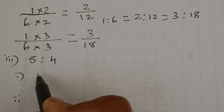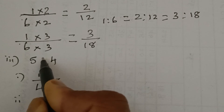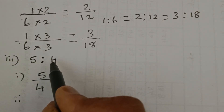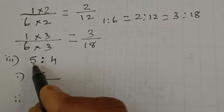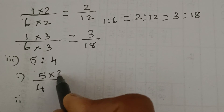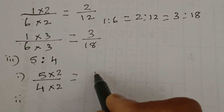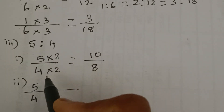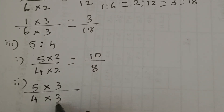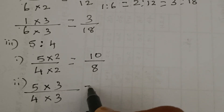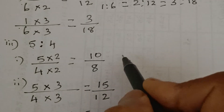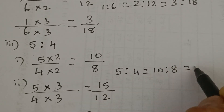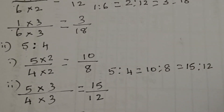Next: 5 is to 4. Write it as a fraction: 5 by 4. The two numbers 5 and 4 are called the terms of the ratio. To find equivalent ratios, multiply both numerator and denominator by the same number. Multiply by 2: 5 twos are 10, 4 twos are 8. For the second ratio, multiply by 3: 5 threes are 15, 4 threes are 12. So, 5 is to 4 is equal to 10 is to 8 is equal to 15 is to 12.